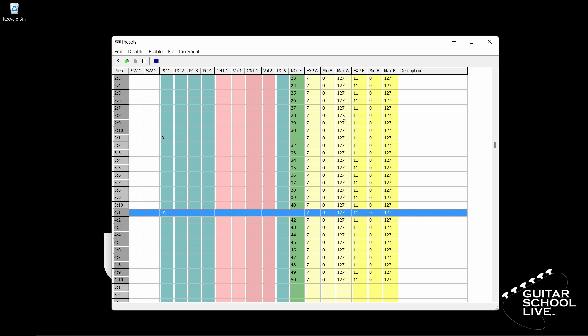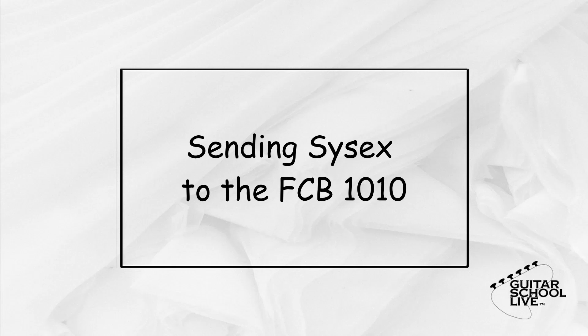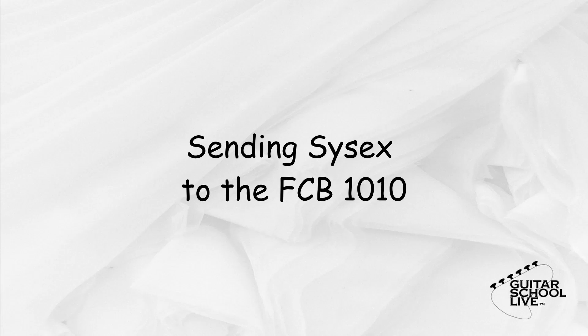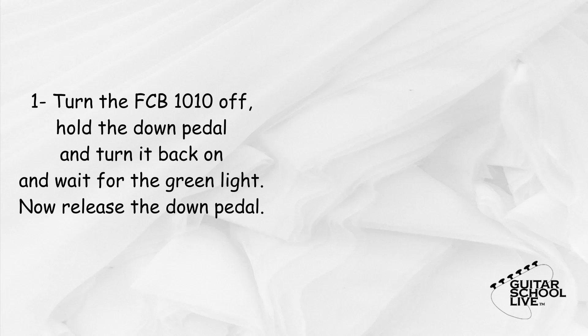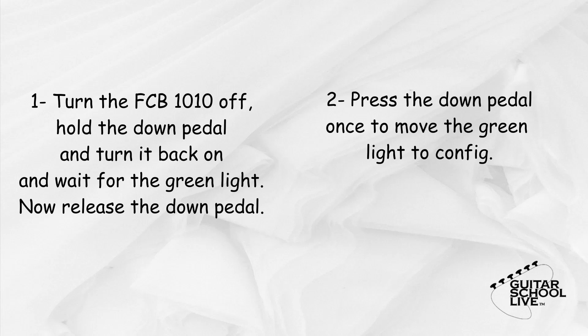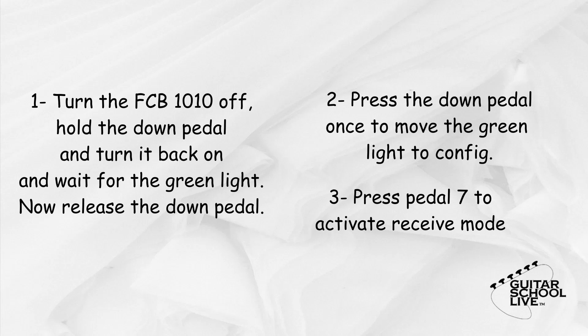Now that we have set up the FCB1010 in the editor, we need to send the commands from the editor to the controller. In order to transmit the data, we must set up the FCB1010 to receive it. This is done in 3 easy steps. First, turn the unit off, then hold the down button and turn it back on. Continue holding the down button until the green light on Direct Select is lit, and then release. Next, press the down pedal once to select Config.